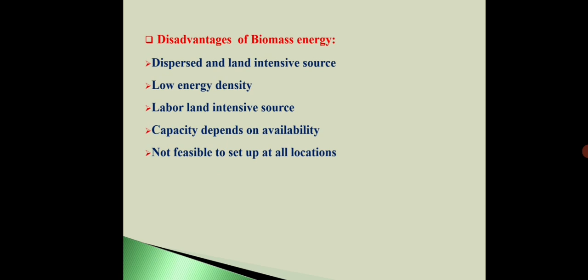What are the disadvantages of biomass energy? It is a dispersed and land-intensive source. The main disadvantage is that it has low energy density — we get less energy from this compared to other sources like coal and biofuels. It is also labour-intensive, requiring significant human resources. Finally, the capacity depends on the availability of that biomass.